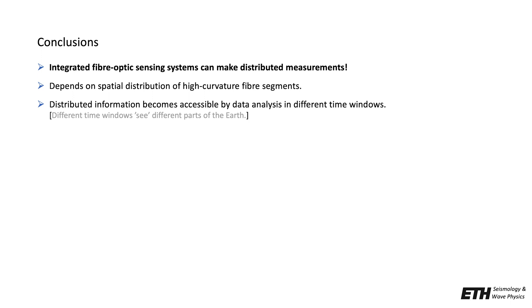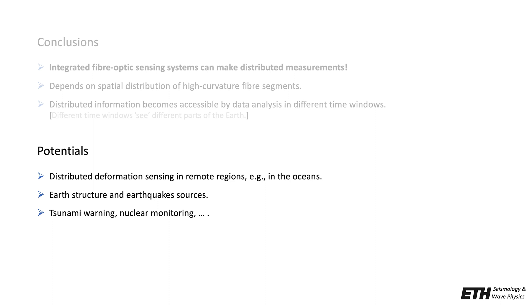In conclusion, we have seen that integrated fiber optic sensing systems can make distributed measurements which depend on the spatial distribution of high curvature fiber segments. The distributed information simply becomes accessible by data analysis in different time windows, because different time windows see different parts of the earth. Potentials of this technology lie in distributed deformation sensing in remote regions, for example in the oceans. This in turn is useful for studies of earth structure and earthquake sources, but also for tsunami warning and nuclear monitoring.